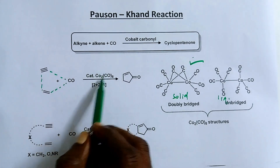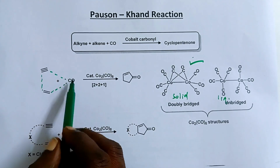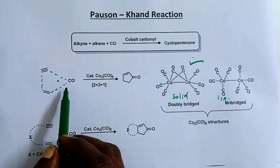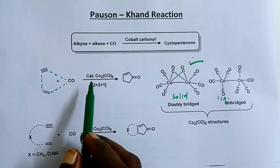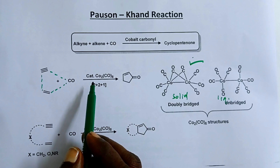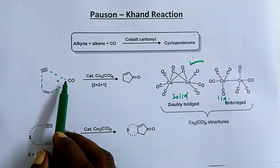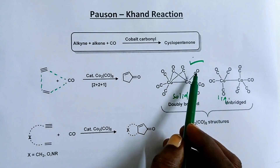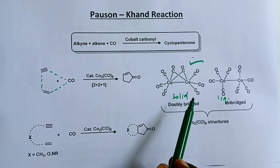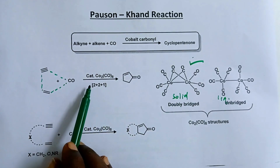Dicobalt octacarbonyl must be used in catalytic amount. When it is used in catalytic amount, we need to separately maintain a carbon monoxide gas atmosphere. In case it is used as a reagent — that is, in stoichiometric amount, meaning one equivalent or two equivalents or even more — then you don't have to use a carbon monoxide gas atmosphere separately, because the metal carbonyl itself bears many carbon monoxide ligands, which is sufficient to provide the carbon monoxide necessary for the Pauson-Khand reaction.